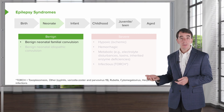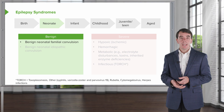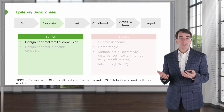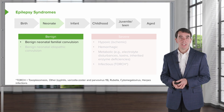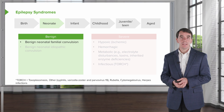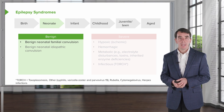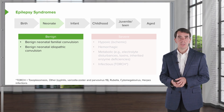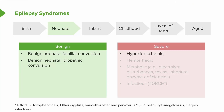In the neonatal period, seizures that are associated with benign neurologic examination findings include benign neonatal familial convulsions and benign neonatal idiopathic convulsions. Those associated with abnormal neurologic exams include seizures from hypoxic ischemic injury, hemorrhagic infarcts in the brain, metabolic dysfunction or inherited metabolic disorders, and infections such as the TORCH infections.